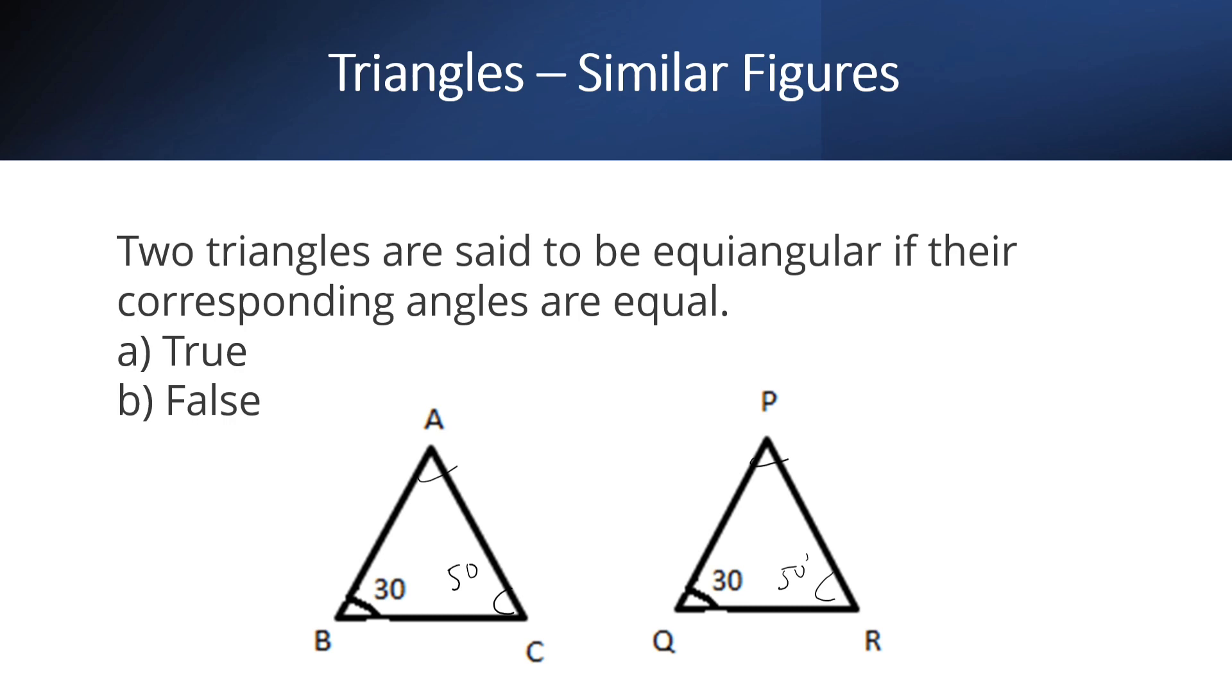So triangle ABC is equiangular to triangle PQR. The answer is true.